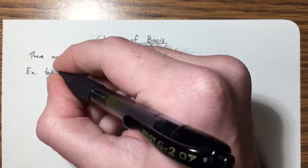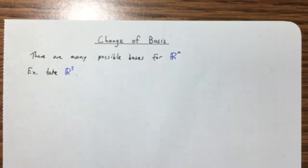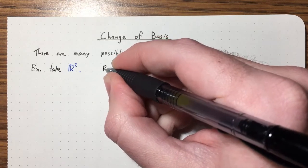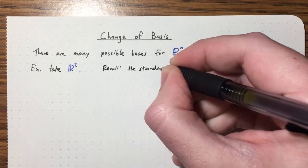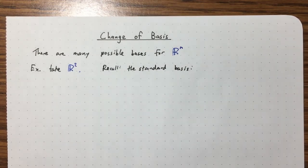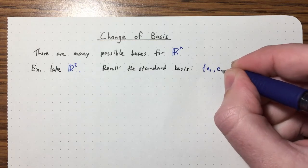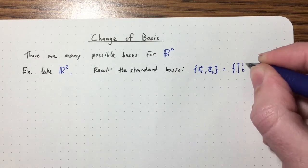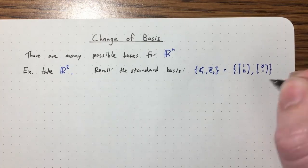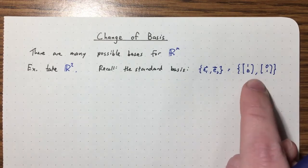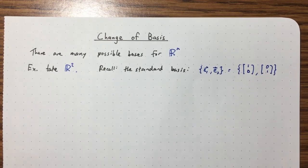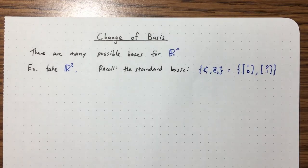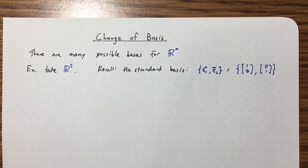Let's take R^2. What are all the bases of R^2? Well, there's the standard basis. The standard basis for R^2 is the set {E1, E2}, where E1 is the vector (1,0) and E2 is (0,1). Certainly this is a basis because these are linearly independent and they span R^2. In order to be a basis, we need both: the two vectors are linearly independent and they span.